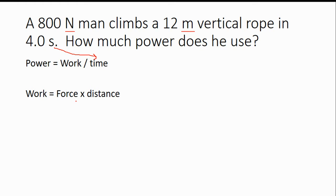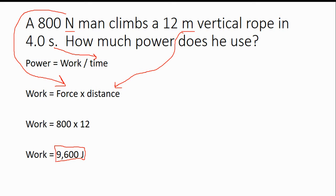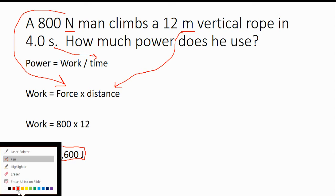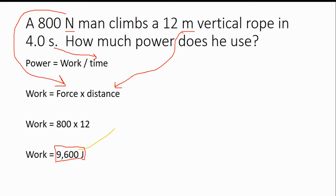But what we do have is we have newtons and meters, which is force and distance. And if you remember, work equals force times distance. So if we take this number, plug it into force, we take our distance, plug it into distance, we have 800 times 12, which gives us a work of 9,600. So at this point, we know our work.